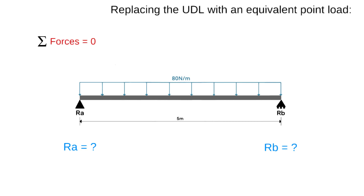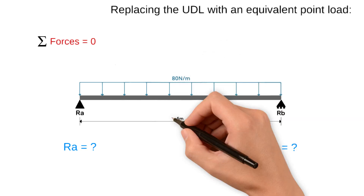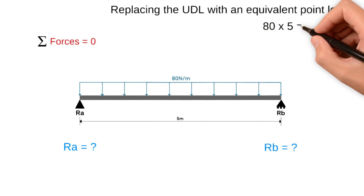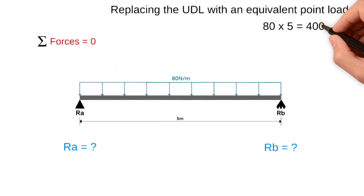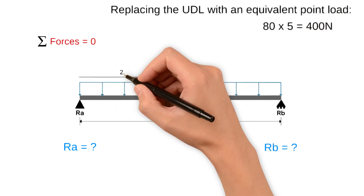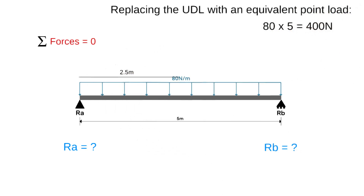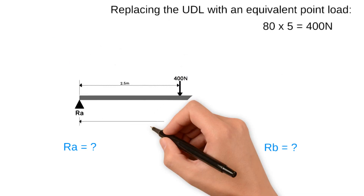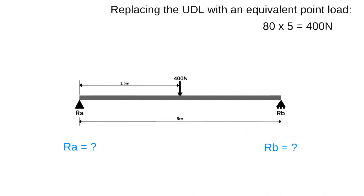In this case we have an 80 newtons per metre load applied over 5 metres. So the equivalent point load would have a magnitude of 400 newtons and would be located at the 2.5 metre point. As we can see our problem has now become a simply supported beam with a point load in the middle.